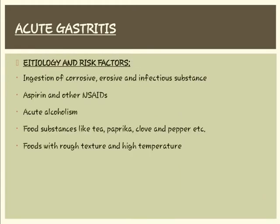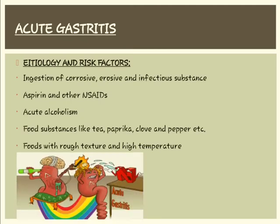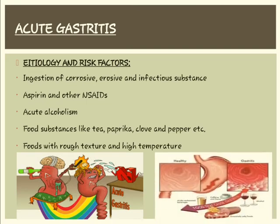The risk factors and causative agents for acute gastritis include ingestion of corrosives, erosives and infectious substances, aspirin and other NSAIDs, acute alcoholism, food substances like tea, paprika, clove, etc., and foods with rough texture and high temperature.